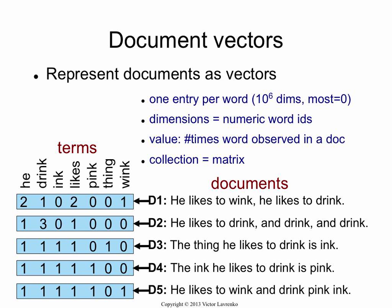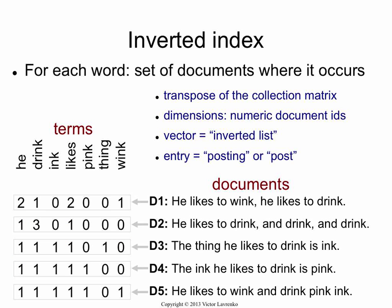Once you think of it this way, the collection of documents is nothing but a matrix. Each document is just a row vector, and the whole collection is just a matrix. Now, what are inverted indices? They're basically the columns of that matrix. So you can think of indexing as the transpose of a matrix.